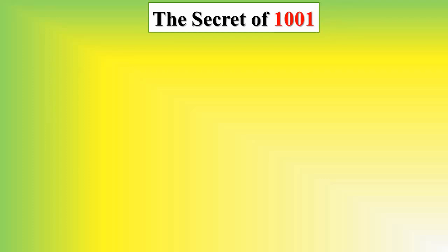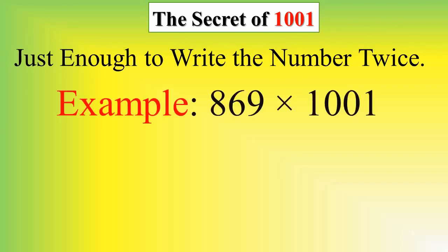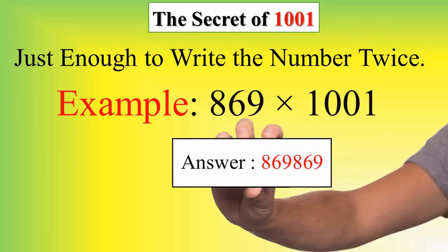Multiply numbers by 1001. Just enough to write the number twice. For example, 869 multiplied by 1001. Yeah, it's the answer: 869,869.